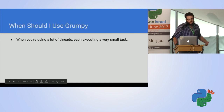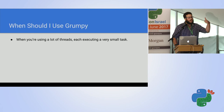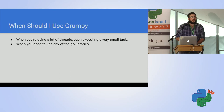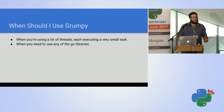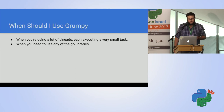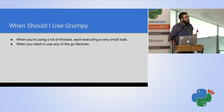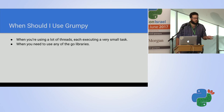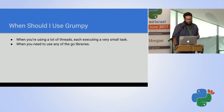When should you use Grumpy? Like I said, when you have lots of threads each executing a very small task - go ahead, it's great. Also, when you need to use any of the Go libraries: when it compiles to Go it uses Go routines, and you can import Go libraries which include great stuff like logging and web handling. I wouldn't recommend using it yet though - looking at the roadmap, they plan to pass the Python test suite by September, but it's not there yet.